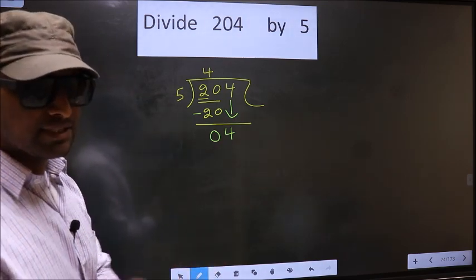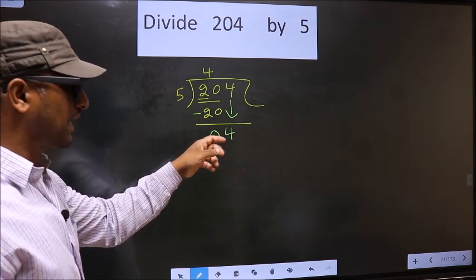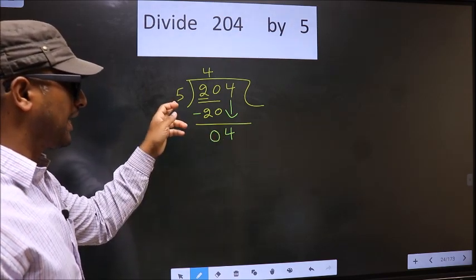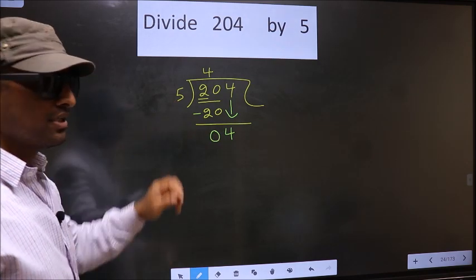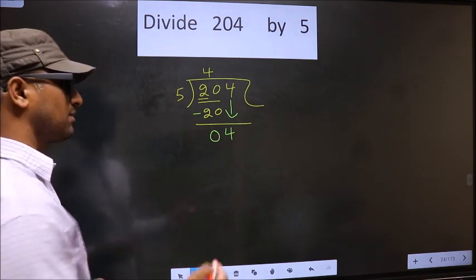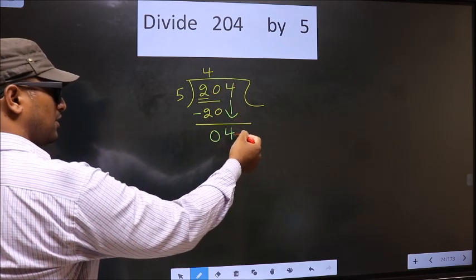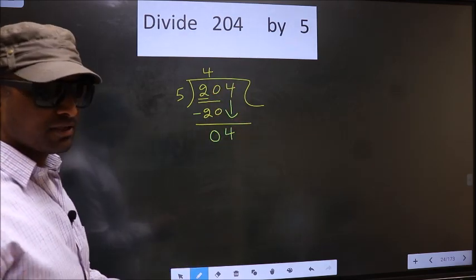And the mistake is this one. Here, we have 4. And here, 5. 4 is smaller than 5. So, what many do is, they put a dot and take 0 here, which is wrong.